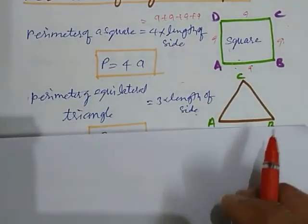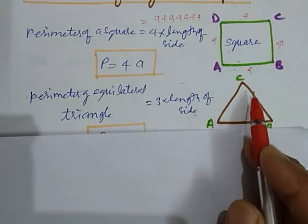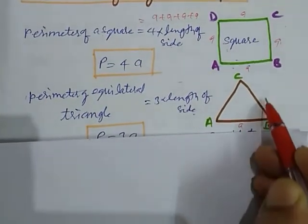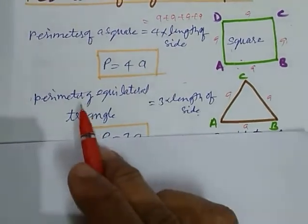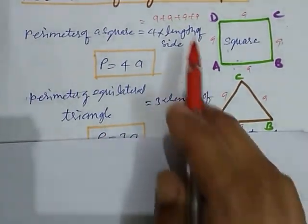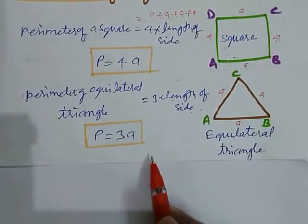Now we take another regular figure. An equilateral triangle whose all three sides are equal. So perimeter of equilateral triangle is 3 into length of side. So we can write P equal to 3a.